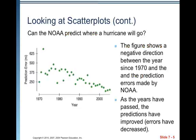Can the NOAA predict where a hurricane will go? Here's a scatterplot looking at year and prediction error. The figure shows a negative direction between the years since 1970 and the prediction errors made by NOAA. As the years have passed, the predictions have improved and the errors have decreased. So this is a negative association, but it's a good thing — we want errors to become smaller and smaller as time goes by.